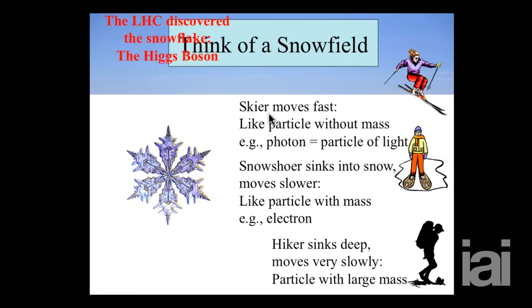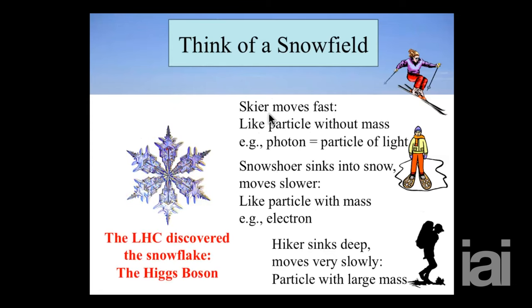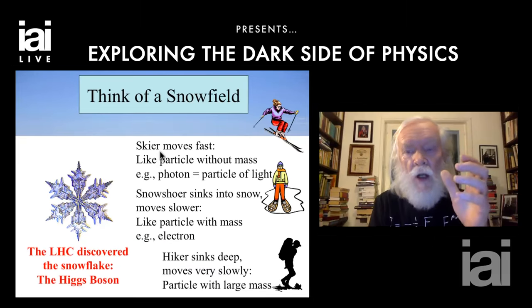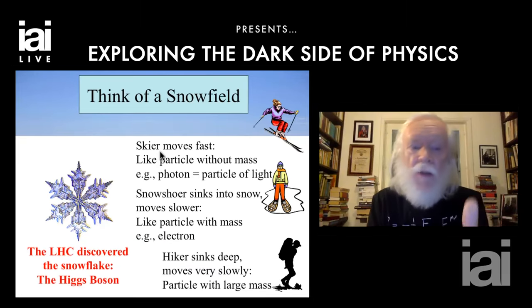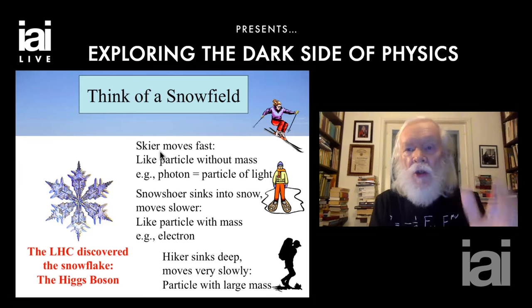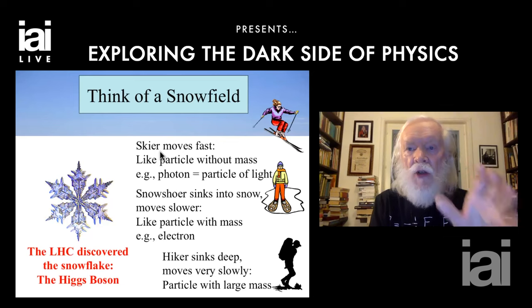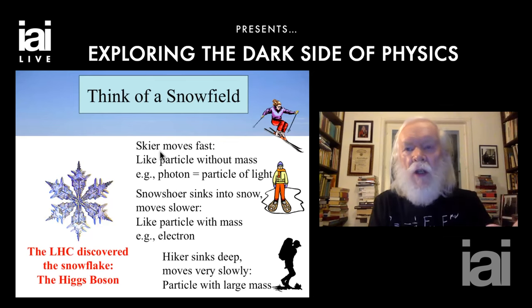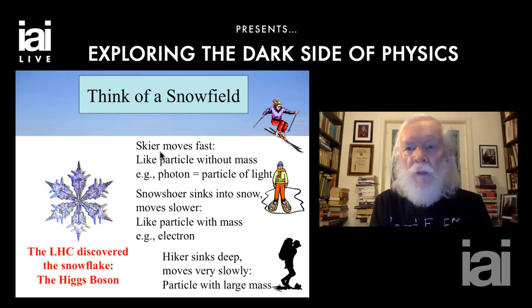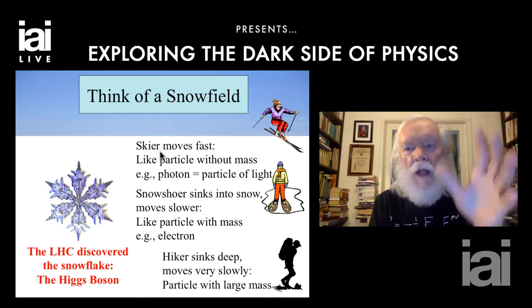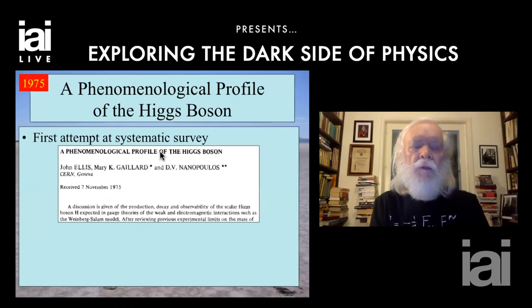The next question is: what is that snow actually made of? We know what regular snow is made of — it's made of snowflakes. And according to Mr. Higgs's theory, the fundamental constituent of that universal field is the particle that we call the Higgs boson. That's the analog of the snowflake.